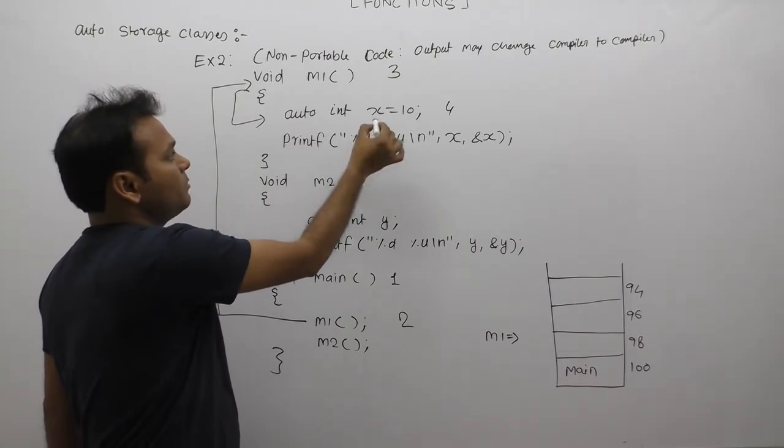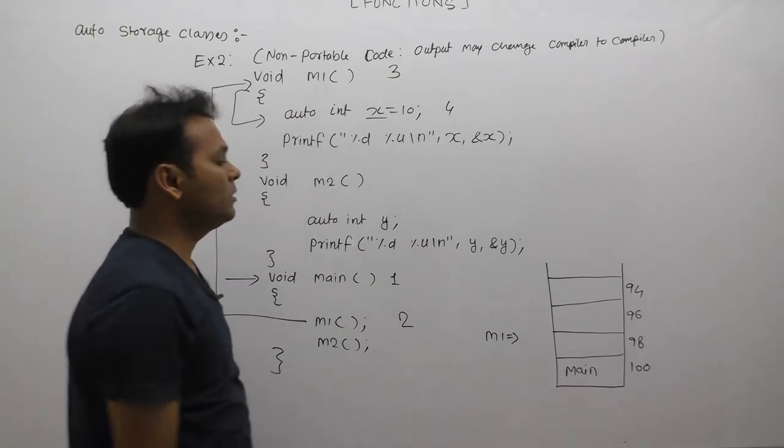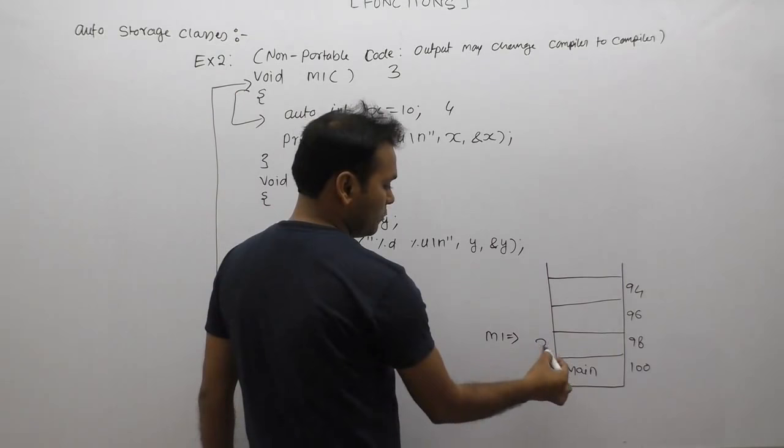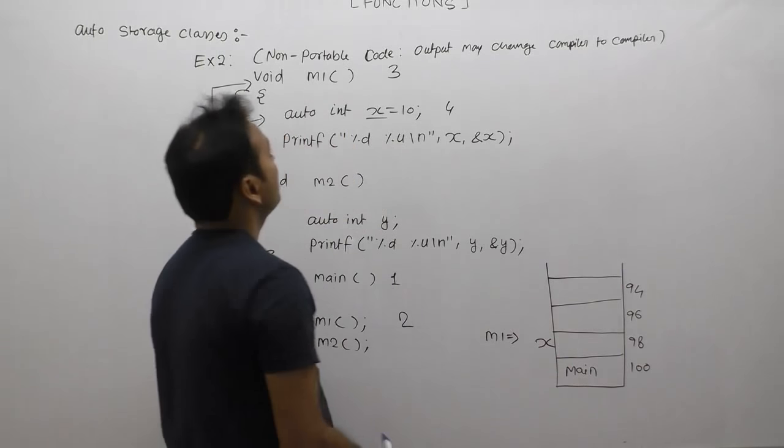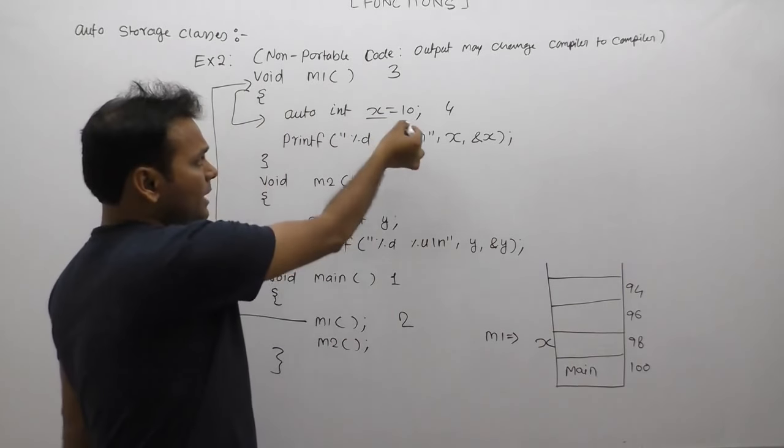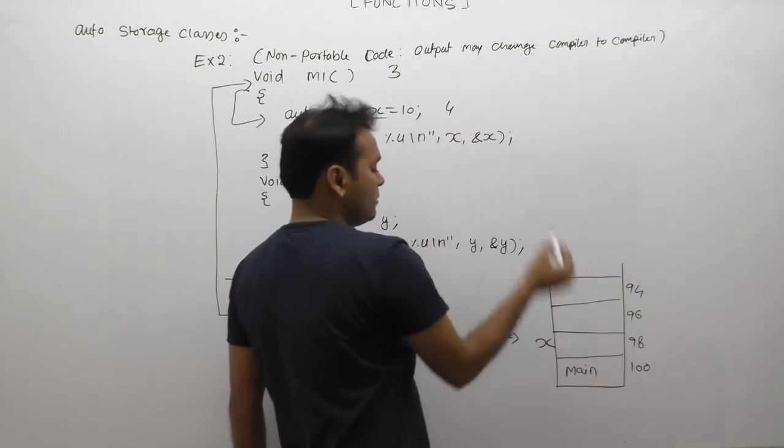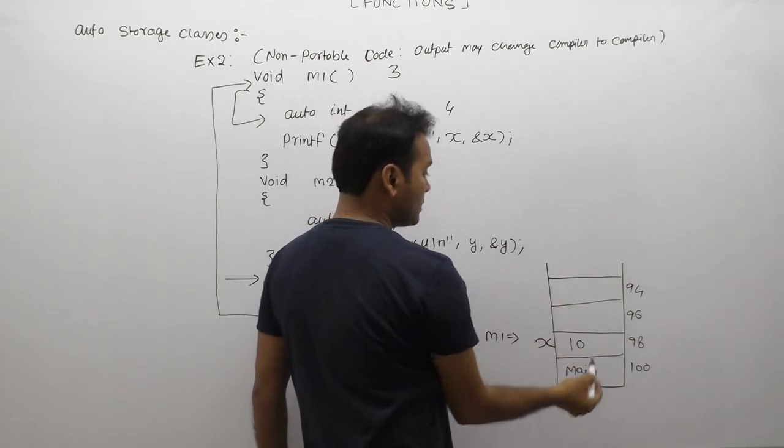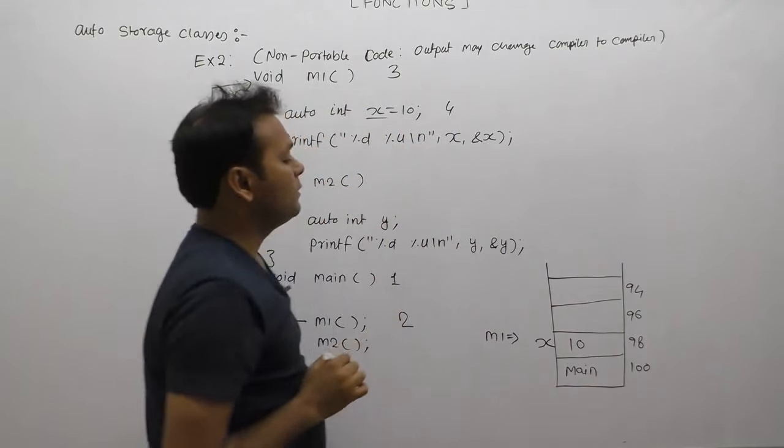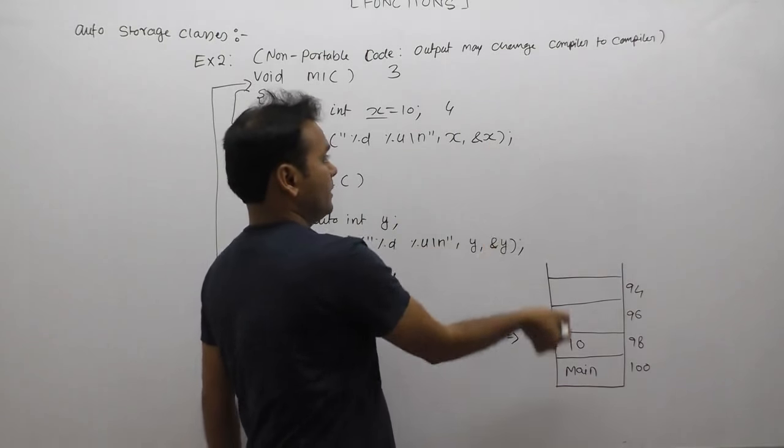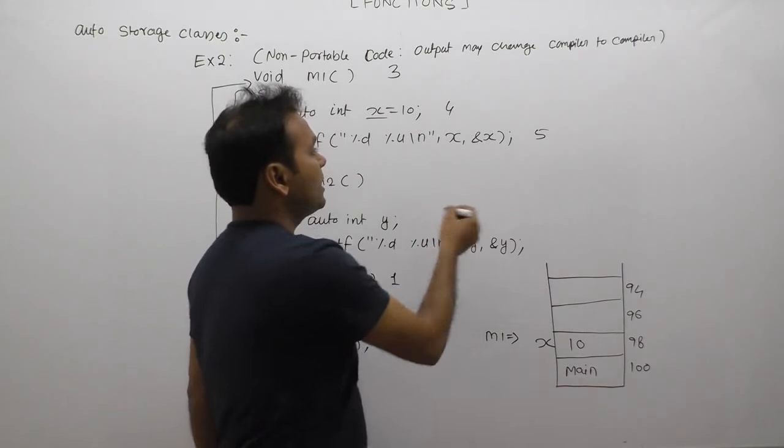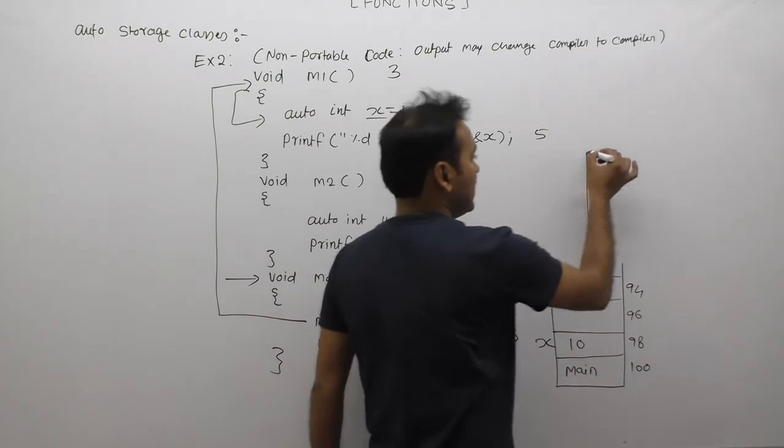Then immediately memory allocation for x, or we can say local variable or auto variable of m1. After executing that statement, x is initialized by 10, the value of x becomes 10. Then the fifth statement displays the value of x and address of x.